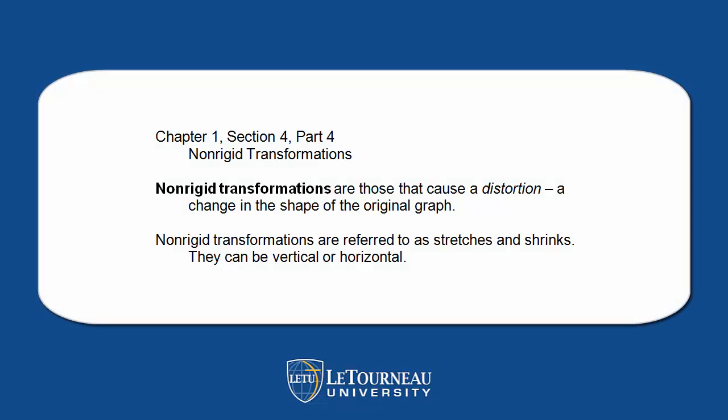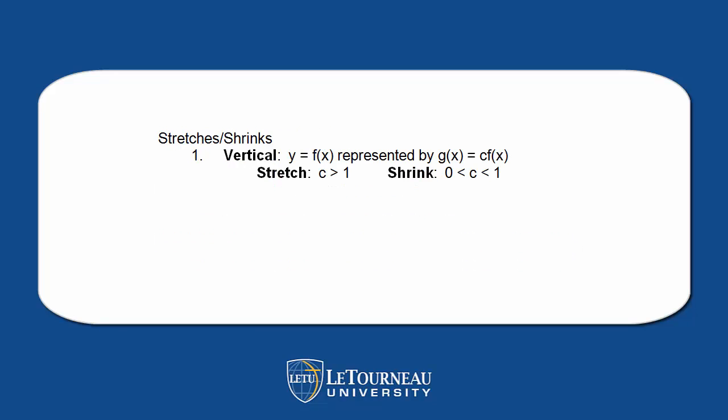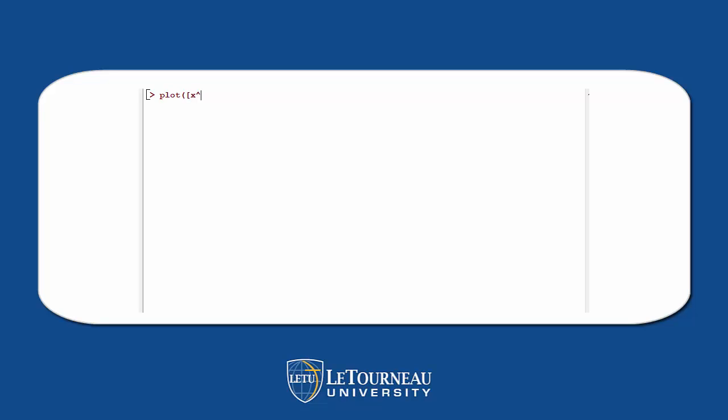In this one, we're going to look at non-rigid transformations. These are transformations that cause a distortion — they either stretch or shrink the graph, and they can stretch or shrink vertically or horizontally. If we want a vertical stretch or shrink, notice we multiply the function by a constant. Let's do some graphing and notice what happens when we have a vertical stretch or shrink.